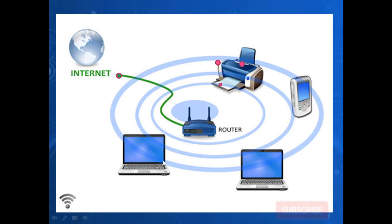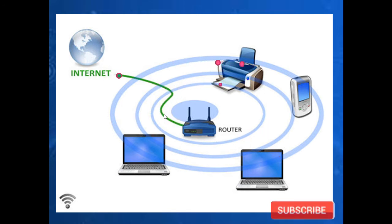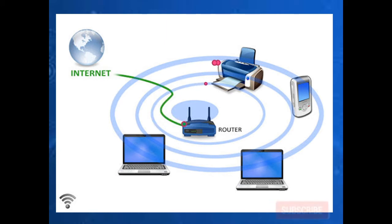Here you can see one router with computers in a local area network. What the router does is give us internet from the outer WAN — the wide area network — so we have access to the internet in our LAN. The LANs are connected through it, and it will route the data as well. This is the way a router is being used.